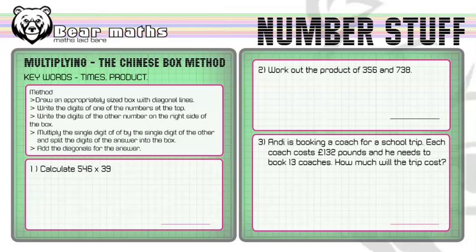Some keywords: times and product. I've got a method here squished into this box. You've got 'draw an appropriately sized box with diagonal lines.' It all makes sense when I show you what I'm talking about. This is just a reminder of what to do once you've been taught. In question number one, you're going to calculate these numbers together - you're going to multiply them.